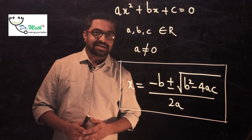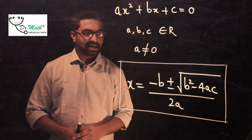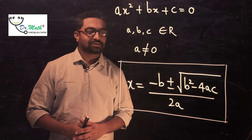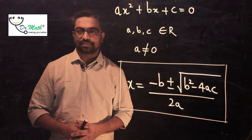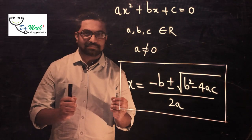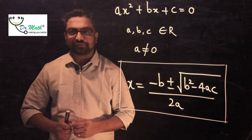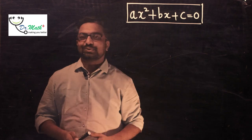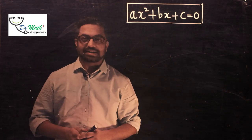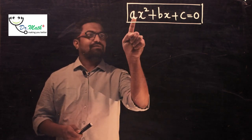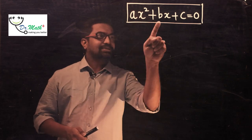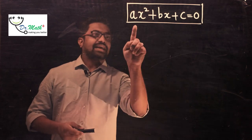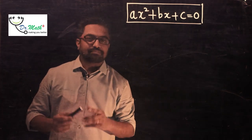This formula looks a little complicated, but how do we arrive at x = (−b ± √(b² − 4ac)) / 2a? Without wasting much time, let's learn the proof. ax² + bx + c = 0 is the standard form of a quadratic equation. Here, a is the coefficient of x², b is the coefficient of x, and c is the constant.